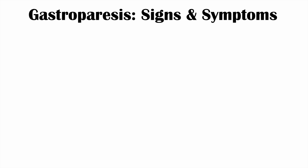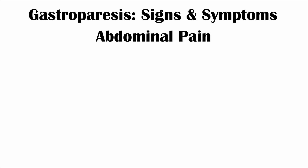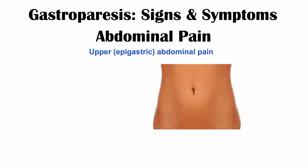Another symptom of gastroparesis is abdominal pain, and it occurs in the upper portion of your abdomen, or your epigastric area. To show you where that is, we're going to look at a diagram of the abdomen, where we break it down into quadrants by putting a cross through your belly button, your umbilicus.